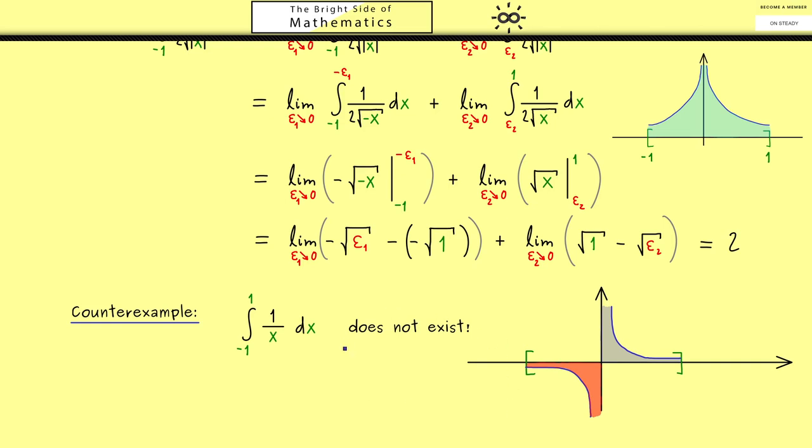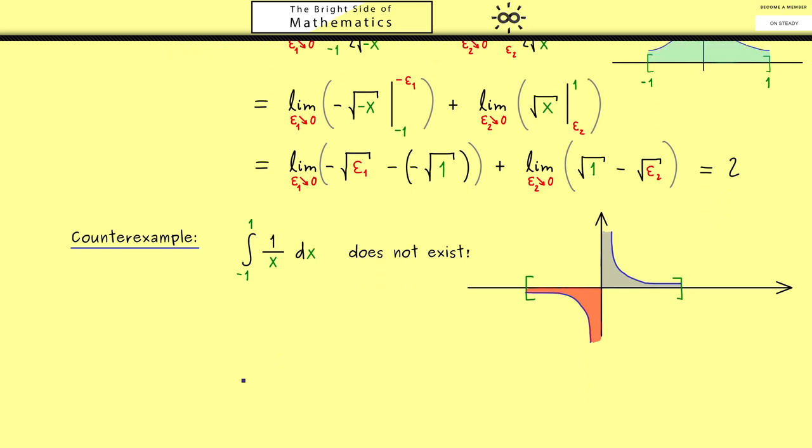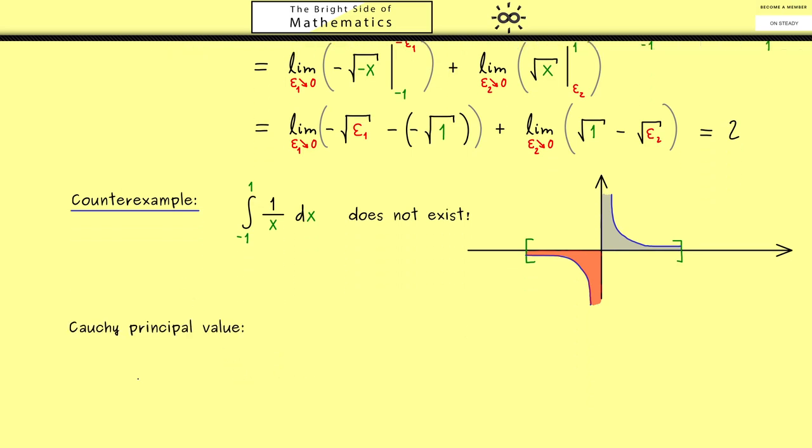However, we still can put meaning to saying that both areas should cancel out. And indeed, this generalization is what we call the Cauchy principal value.